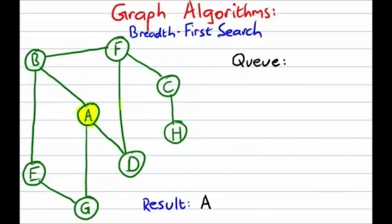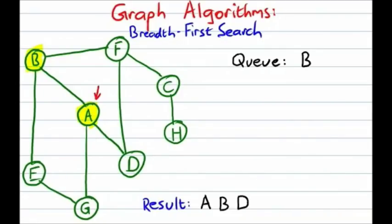The main difference is that in this case, we're currently working on vertex A. Of all the vertices connected to A alphabetically, the one that comes first is B. So we're going to visit B, mark it as visited, and add it to the queue — but we're not going to move to B, we're still at vertex A. We continue from A and take a look at the next vertex connected to it alphabetically, which is D. Mark it as visited and add it to the queue. Again, we're not moving to D yet — we're still at vertex A.